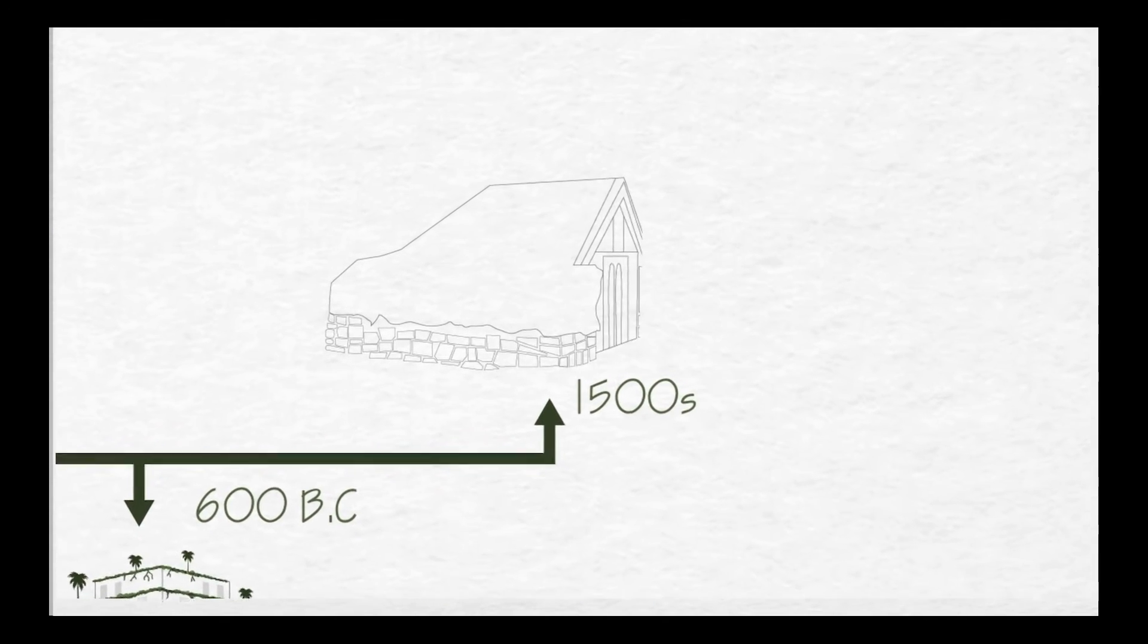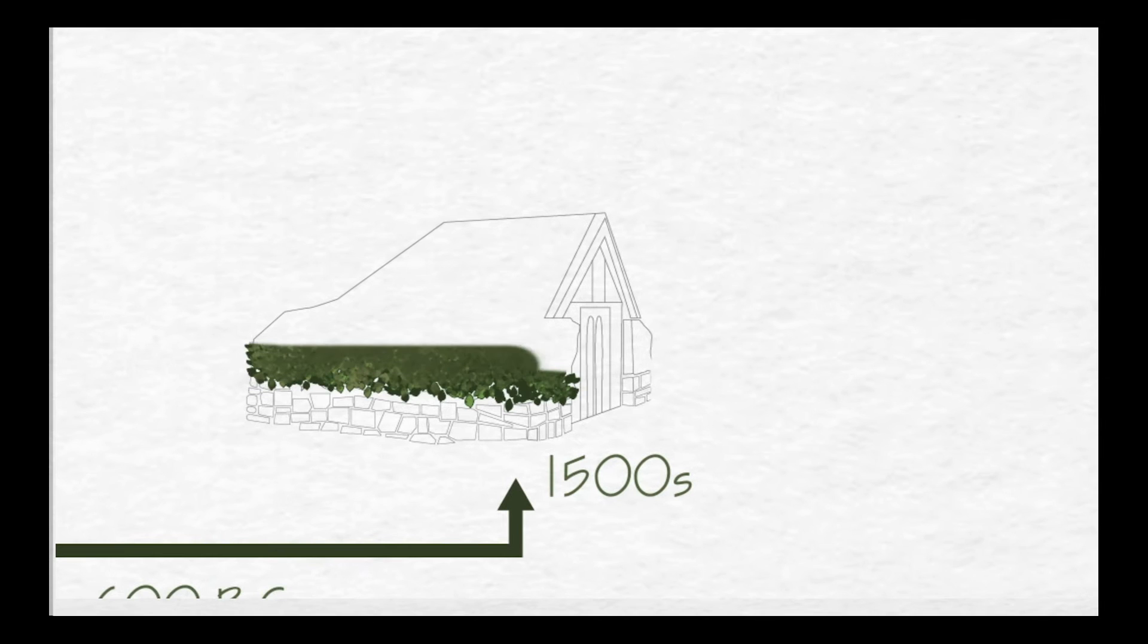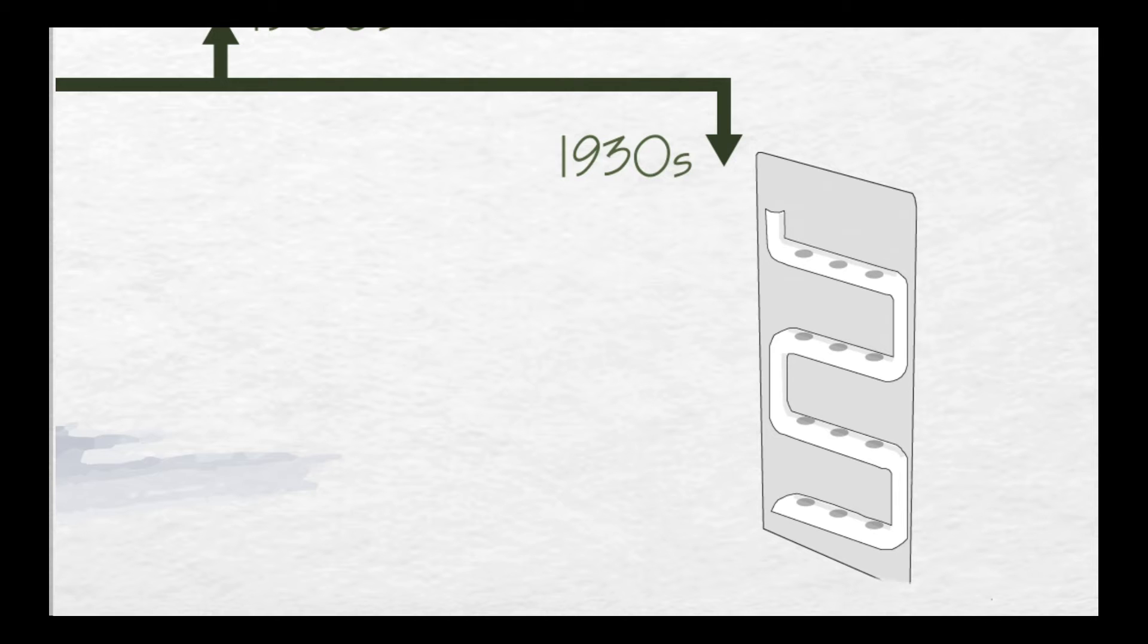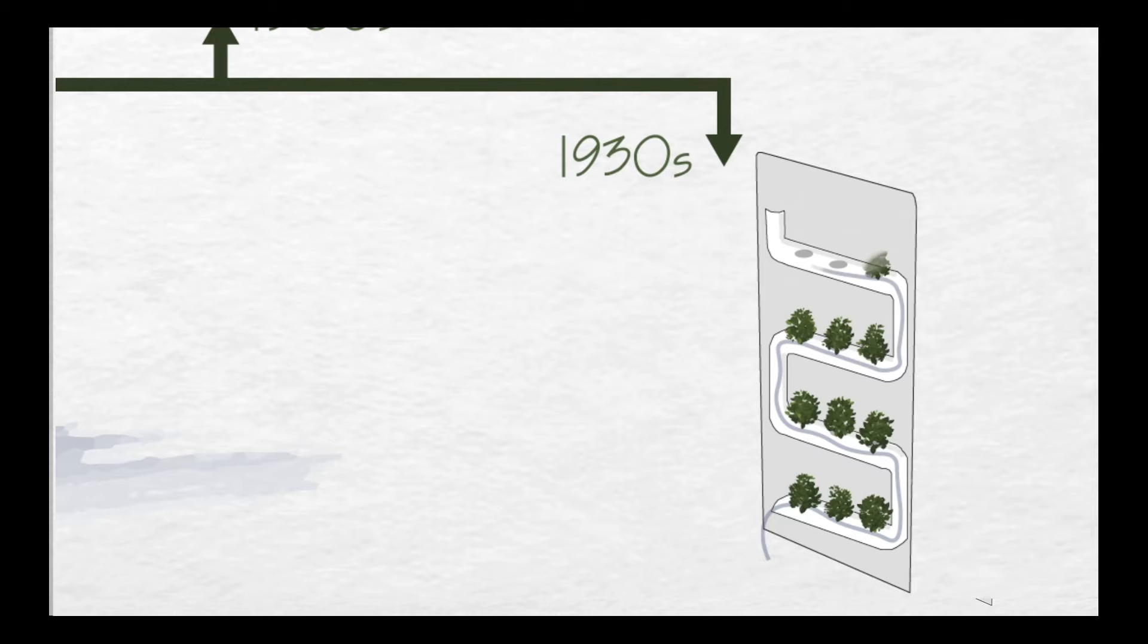With time, numerous civilizations used climbing plants to cover buildings, what is now known as green facades and roofs. In the 1930s in America, greening buildings started with the development of hydroponic systems on green walls.